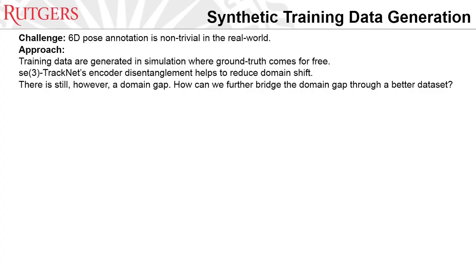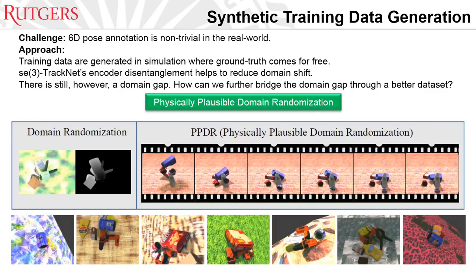Unlike single-image 6D-pose estimation, for video-based 6D-pose tracking, training a deep neural network requires densely annotated 6D-pose labels on each frame of the video, which is non-trivial in real-world data. In this work, we generate training data in simulation where the ground truth comes for free. Although SC3 TrackNet's encoder disentanglement helps reduce the domain shift, a domain gap still remains. We further bridge the domain gap through physically plausible domain randomization applied to train the video-based 6D-pose tracking network.